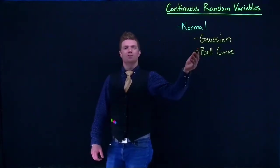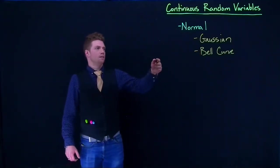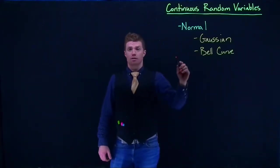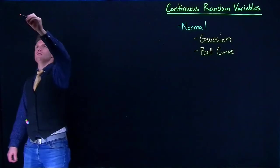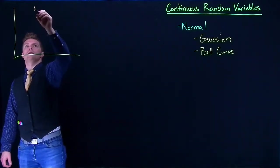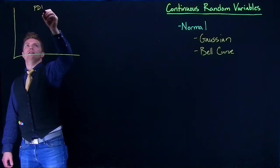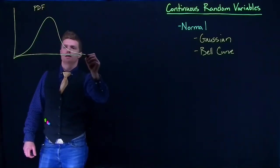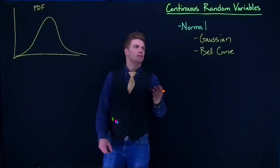Gaussian is because it was popularized by Gauss, and bell curve is based upon the shape that it looks like. So if we plot, for example, our probability density function, it looks kind of like this, shaped something like a bell.